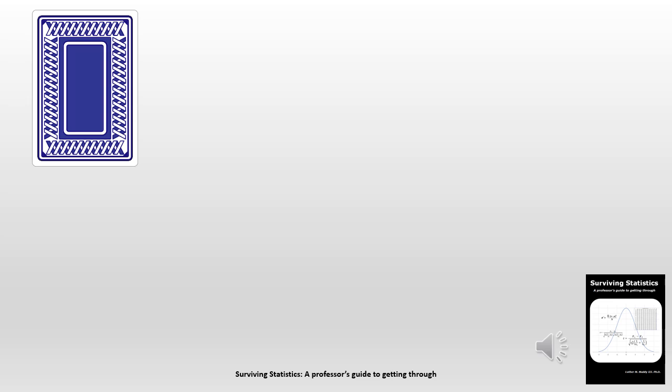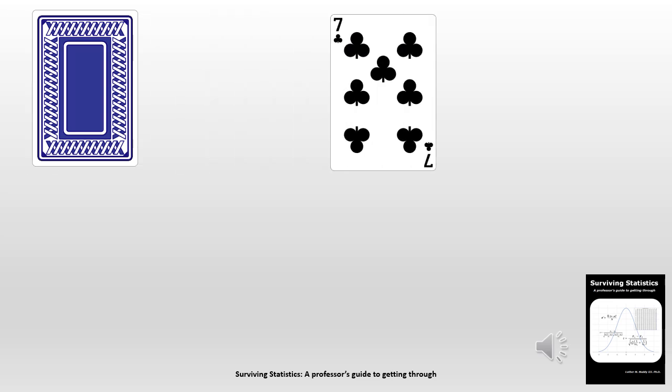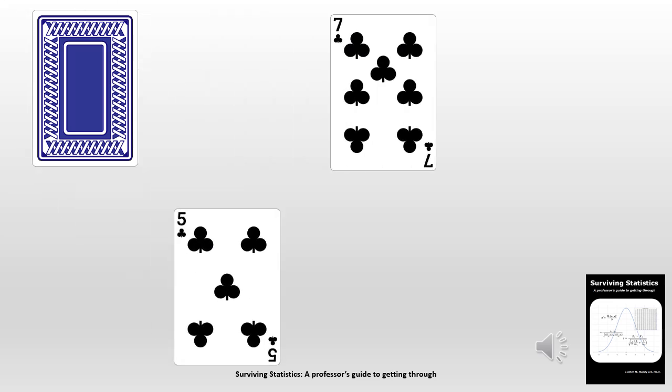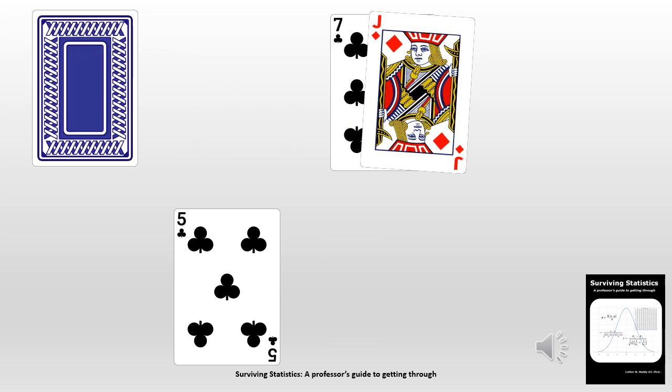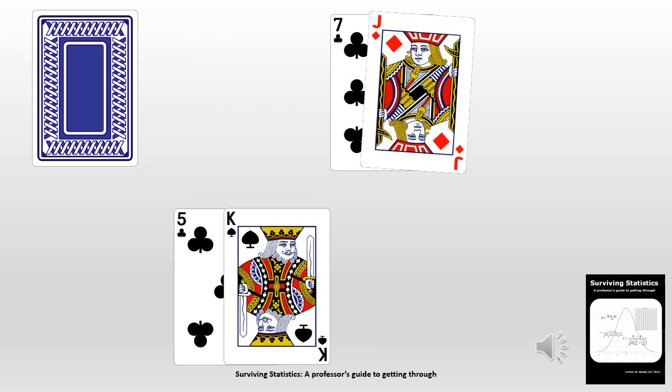Let's try an example. The dealer is dealing the cards and starts with a seven. You get a five. The dealer gets a jack, so the dealer has 17 and you have 15. Now you're going to have to make some very difficult decisions, but you'll do that very intelligently based on probabilities.